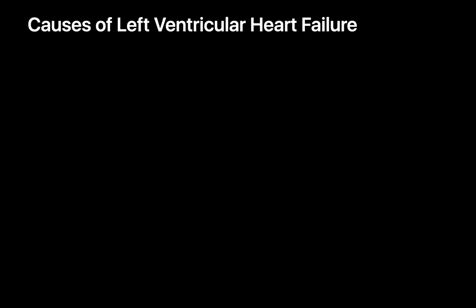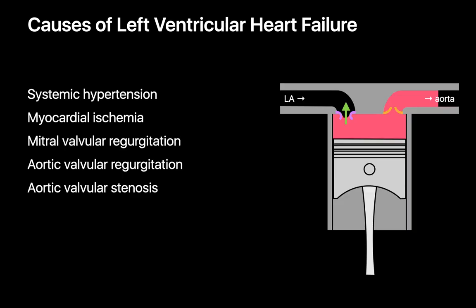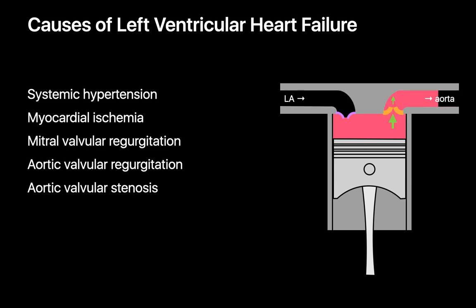The most common causes of left-sided heart failure are long-term high blood pressure and coronary artery disease. However, problems with the mitral and aortic valves can also cause left ventricular heart failure. For example, with mitral valvular regurgitation, the left ventricle's stroke volume is partially squandered because some blood gets propelled into the left atrium instead of the aorta when the left ventricle contracts. With aortic valvular regurgitation, some blood the left ventricle propelled into the aorta is allowed to return into the left ventricle. With aortic valvular stenosis, resistance at the aortic valve impedes free forward flow of blood from the left ventricle into the aorta.